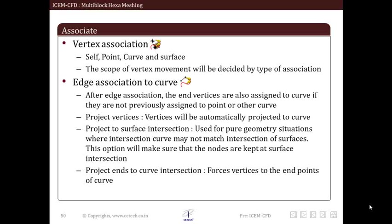The project vertices option automatically projects vertices to curve. The project to surface intersection option is used for pure geometry situations where intersection curve may not match intersection of surfaces. This option will make sure that nodes are kept at surface intersection. The last one which is project ends to curve intersection option forces vertices to end points of curve.